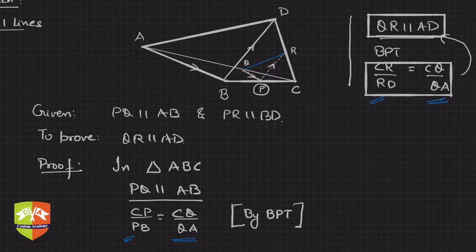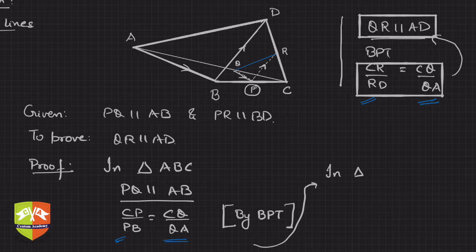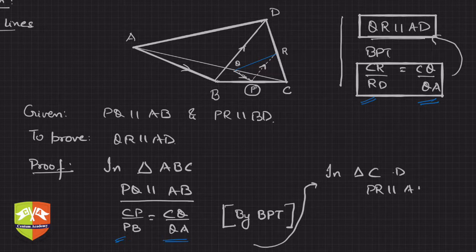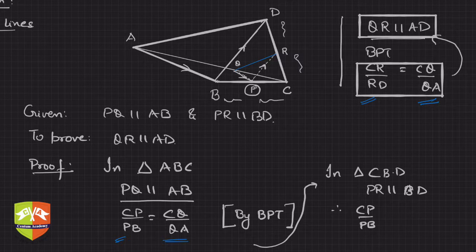Now in triangle CBD, PR is parallel to BD. Again by BPT, we can write CP/PB = CR/RD. This is equation number two.